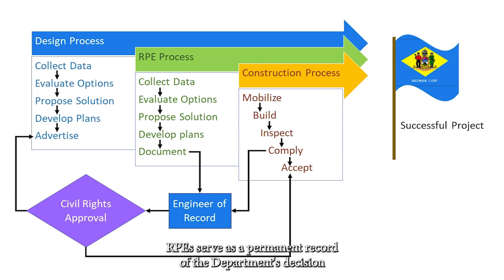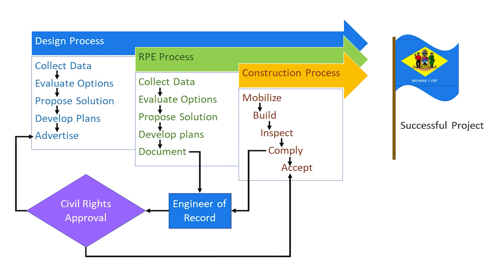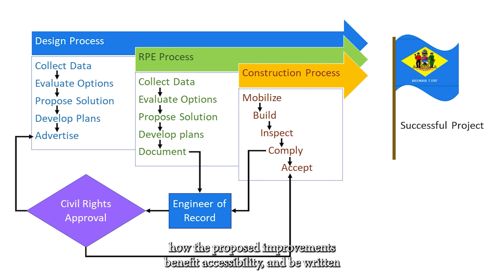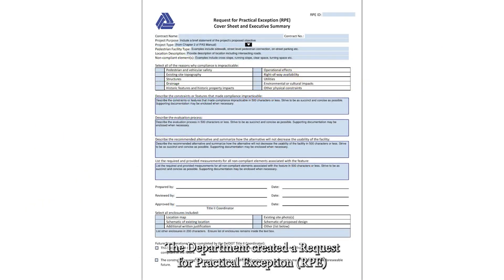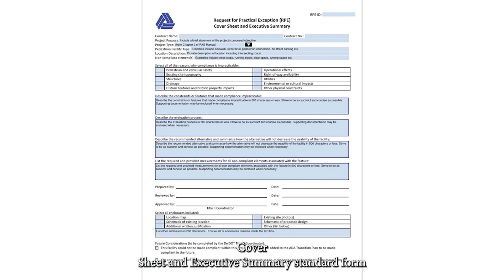RPEs serve as a permanent record of the Department's decision-making process to provide reasonable accommodations at specific locations. For that reason, RPEs must document site-specific challenges, state how the proposed improvements benefit accessibility, and be written in a way that a reader with limited knowledge of the location can come to the same reasonable conclusion. The Department created a Request for Practical Exception RPE Cover Sheet and Executive Summary standard form to aid practitioners in the RPE development process.